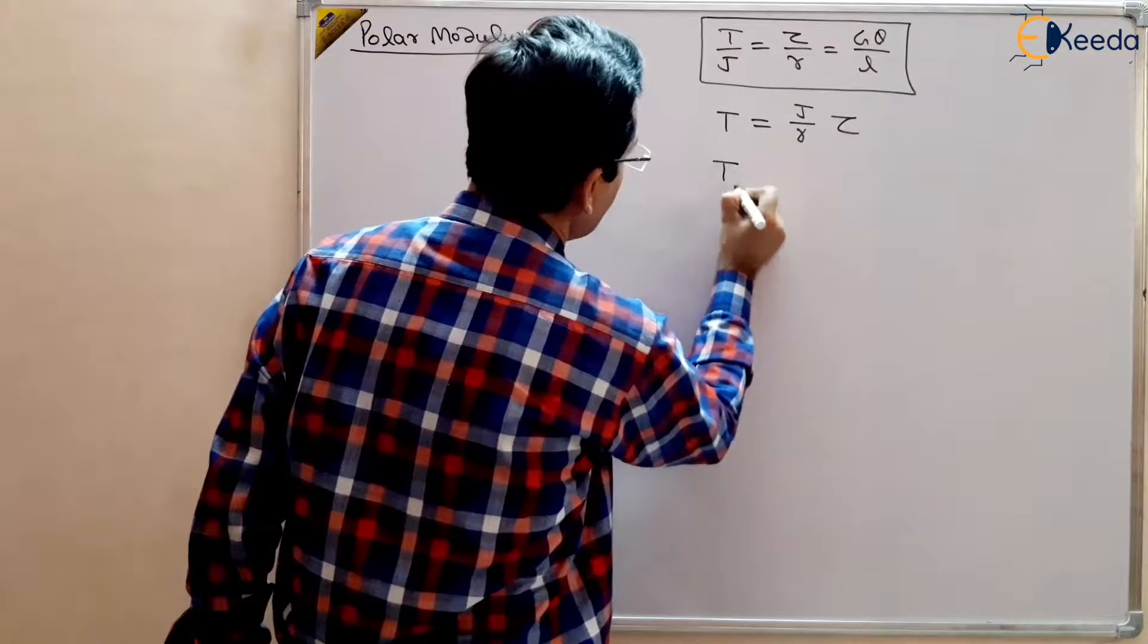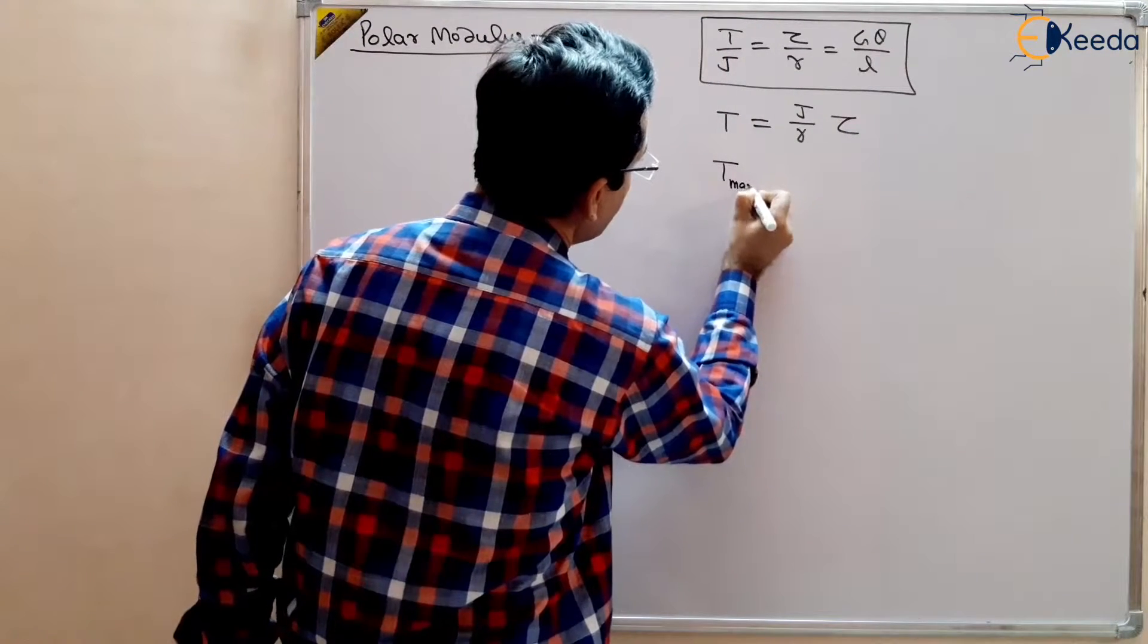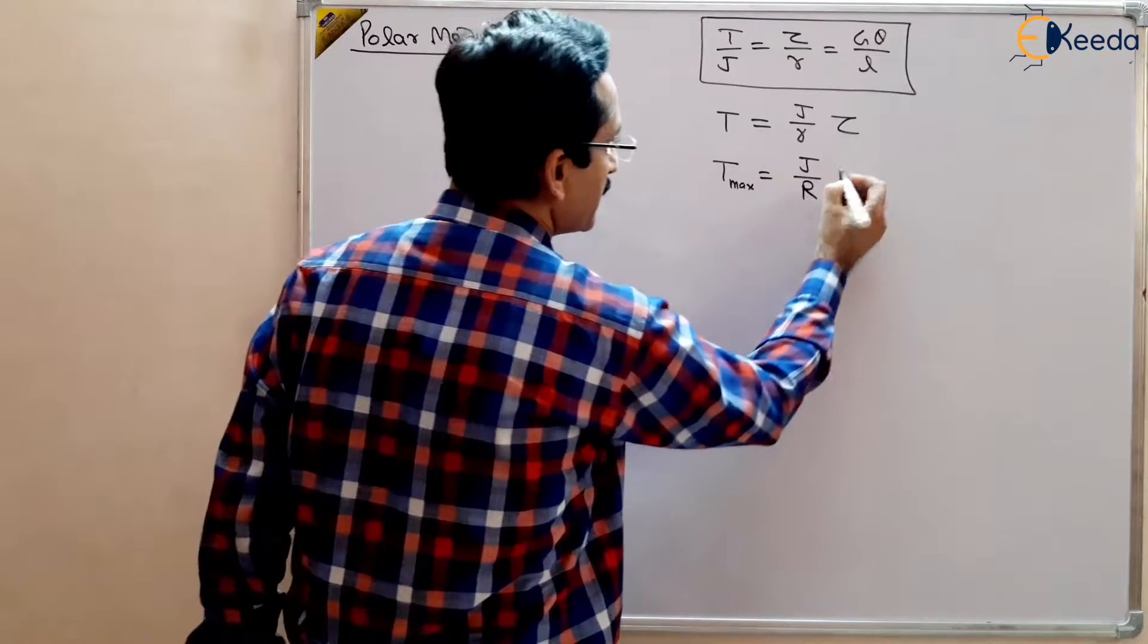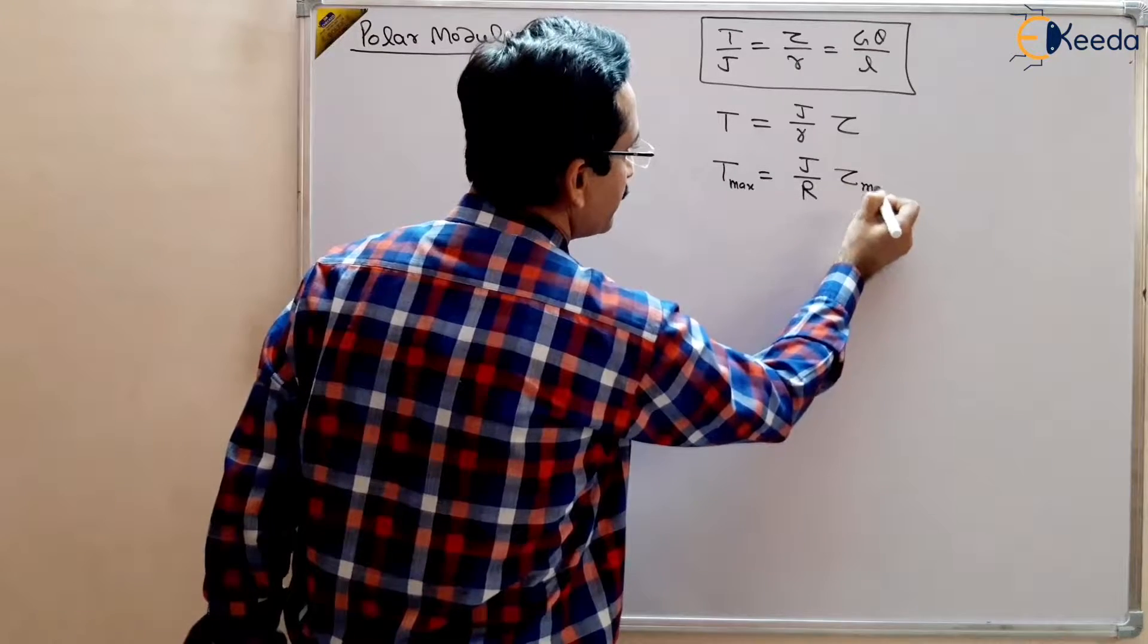So if this is the stress, then what is the maximum torque? T max, T max, that is equal to J by capital R for a solid shaft and that is tau max.